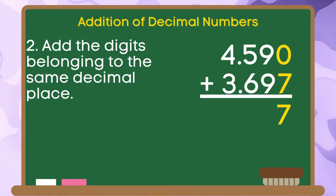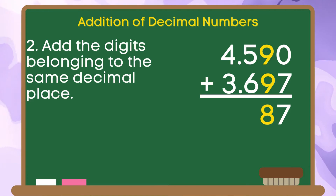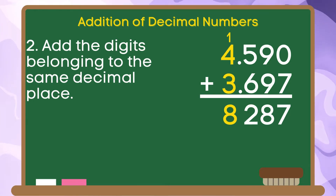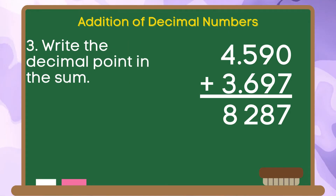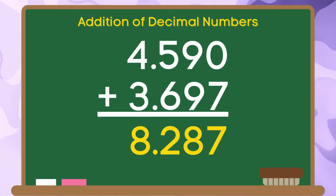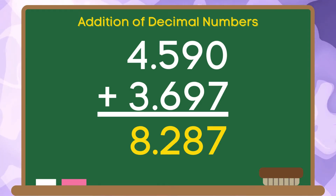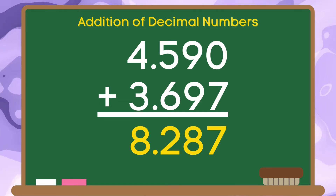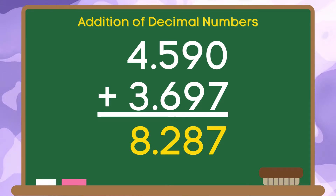0 plus 7 is equal to 7. 9 plus 9 is equal to 18 — bring down 8, carry 1. 1 plus 5 plus 6 is equal to 12 — bring down 2, carry 1. 1 plus 4 plus 3 is equal to 8. For the third step, let's write the decimal point in the sum. Therefore, if we are going to add 4 and 590 thousandths to 3 and 697 thousandths, the sum is 8 and 287 thousandths.